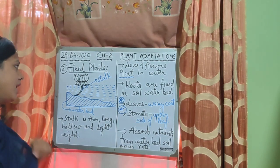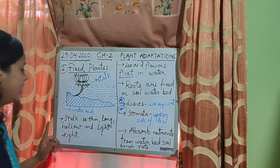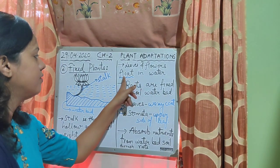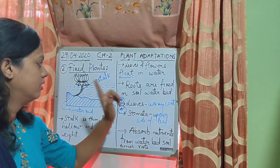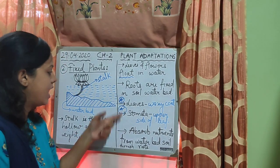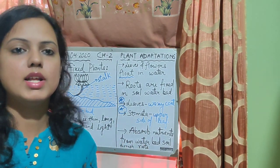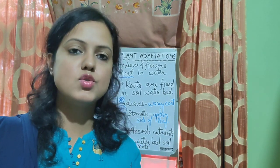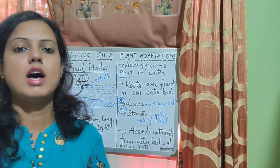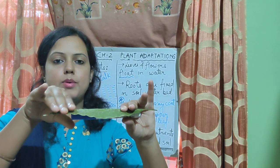Let's have a quick revision of fixed plants. Fixed plants are aquatic plants. They have stalks which are thin, long, hollow and lightweight. Their leaves and flowers float in water. Roots are fixed in the soil of the water bed. Two adaptations: first, leaves have a waxy coating on their outer surface to prevent them from getting wet. Second, stomata is present on the upper side of the leaves — because the underside is submerged and sunlight does not reach it.